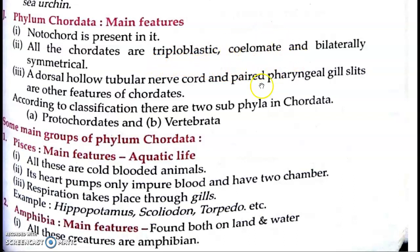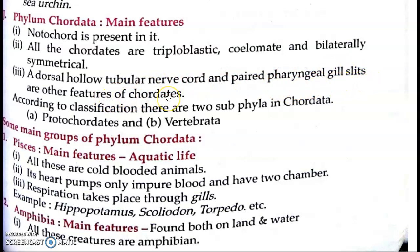They are coelomate — unke andar coelom bhi hoti hai. And bilaterally symmetrical — bilaterally symmetrical humne previous chapter mein padha tha. A dorsal hollow tubular nerve cord — ek dorsal hollow tubular nerve cord hoti hai. Dorsal yaani ki upri surface par, hollow means khali, tubular means tube jaisi nerve cord present hoti hai. And paired pharyngeal gill slits present hote hain — ye other features of Chordata hain.